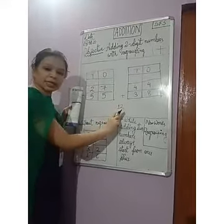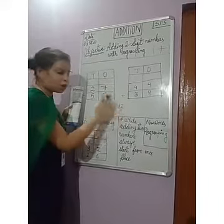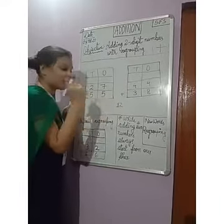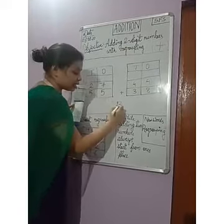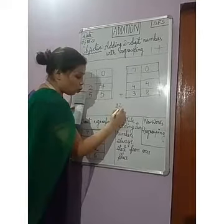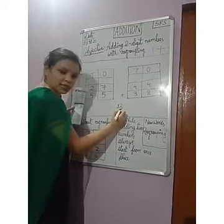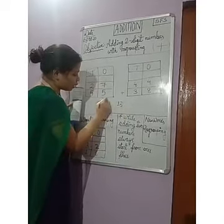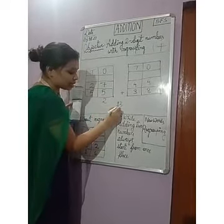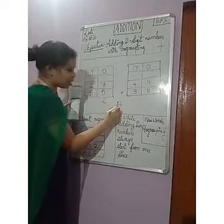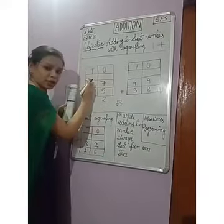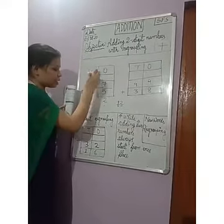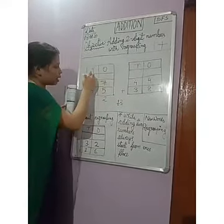Now we got a two-digit number here. In this column we will put only one digit — the digit in the 1's place, which is 2. So 2 will come here. And the digit in the 10's place, which is 1, will go to the next column — from the 1's place to the 10's place.